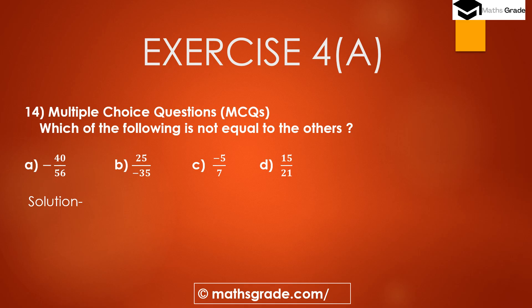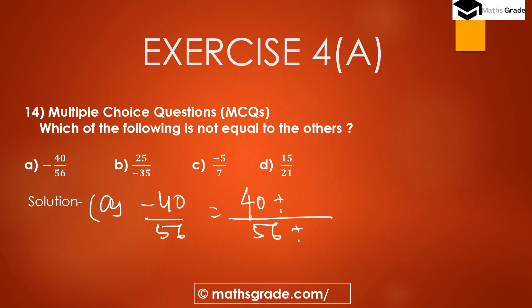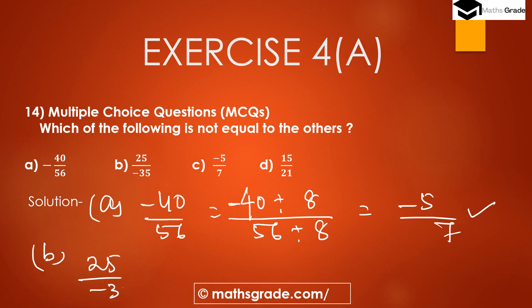Question number 14 — multiple choice question: which of the following is not equal to the others? Option A is -40/56. We convert to simplest form by finding the HCF of 40 and 56, which is 8. So -40 ÷ 8 = -5 and 56 ÷ 8 = 7, giving us -5/7.